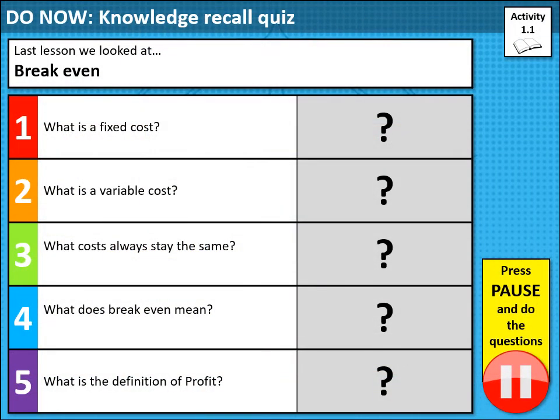First of all we are going to look over what we did last time we were actually in school. I don't know if you can remember that — it's quite a long time ago now. We are going to look at break even. Can you remember: what is a fixed cost? What is a variable cost? What costs always stay the same? What does break even mean? And what is a definition of profit? You can look in your textbook which has been on Show My Homework.